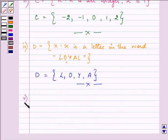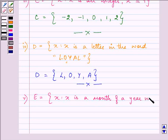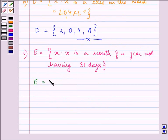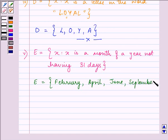Proceeding on to the fifth part, we have set E is equal to x such that x is a month of a year not having 31 days. So let us think which are the months of a year which are not having 31 days. E is equal to February, April, June, September and the last one is November. So this completes the answer to the fifth part.